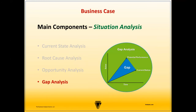The next section of the business case is the alternative assessment. Generally, there will be more than one solution that can address the business need. This section will assess the various solution options and describe each one at a level of detail sufficient enough for decision-makers to make an informed decision.